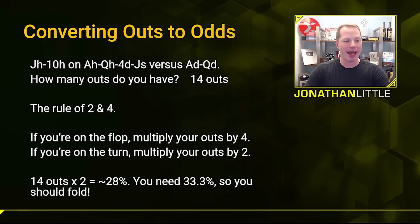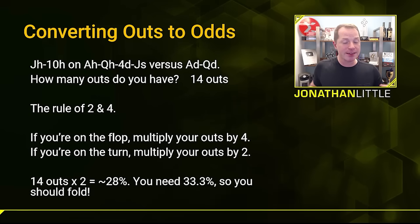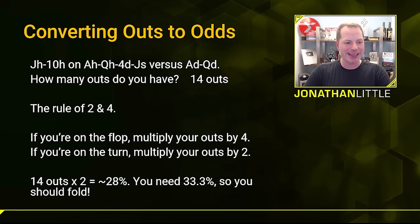But remember, the opponent bet $200 into the $200 pot, which means you actually need to win 33% of the time. Because 28 is less than 33, in this scenario you should fold. If you had more outs — say you had 20 outs — well, 20 times 2 equals 40, and 40 is more than 33, so it would be an easy call.